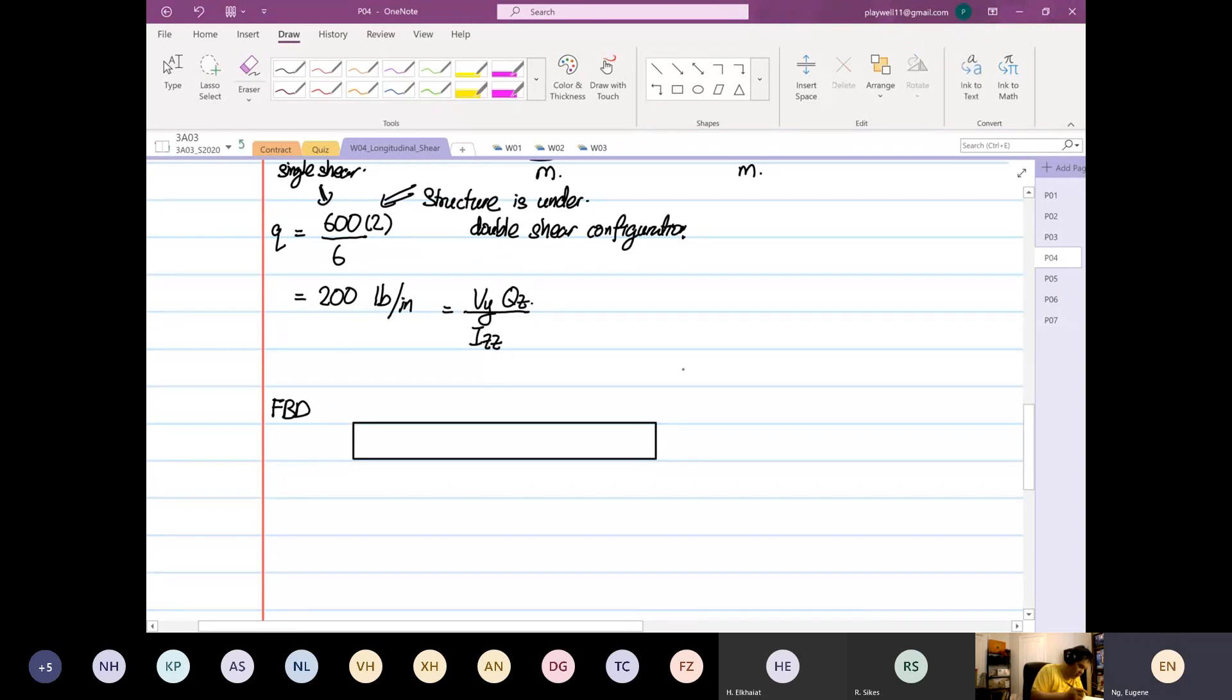We are going to quickly sketch out our free body diagram. This is our point A, our point B. So given how the structure is loaded, it's not drawn properly. There's no pin or whatsoever. But we know we have an AY and we know that we have a BY.